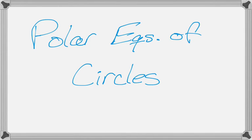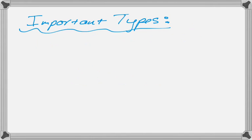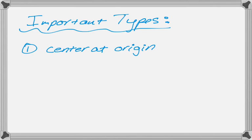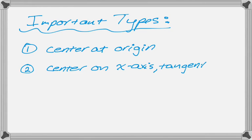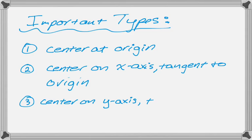This video is going to be about polar equations of circles, which is really one of the most basic curves you can have in polar. There are three important types: circles centered at the origin, circles centered on the x-axis that are tangent to the origin, and circles centered on the y-axis that are also tangent to the origin.